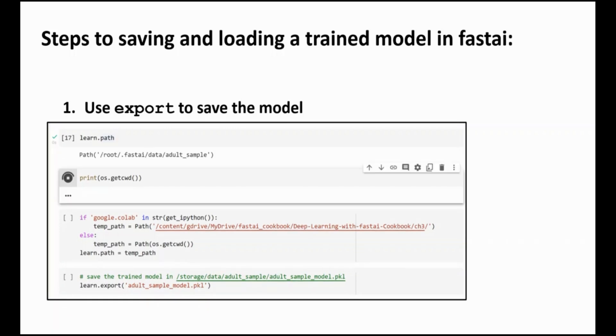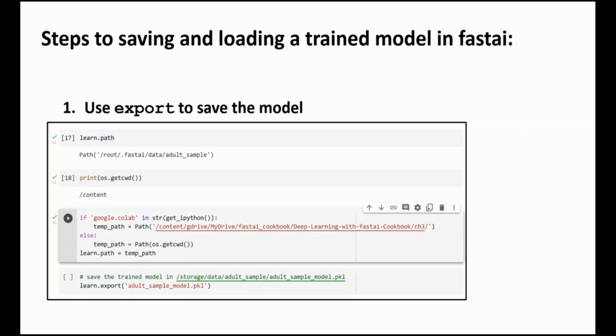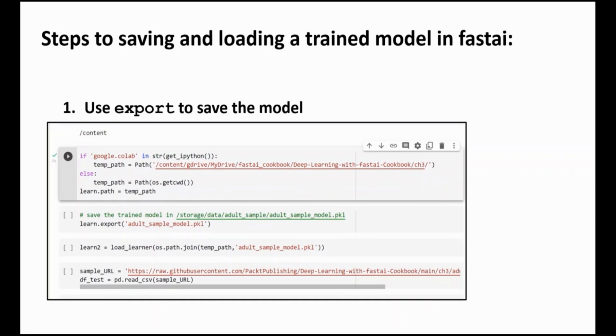First we'll set the path of the model to a writable directory. For Colab we set the fully qualified path explicitly so that it corresponds to the same directory and drive as the notebook. For gradient we can just set the path to the current directory.